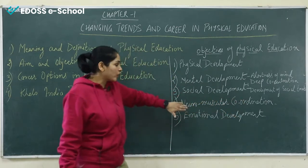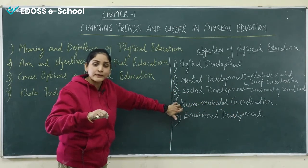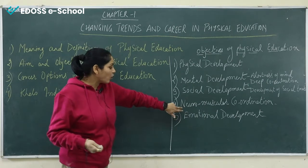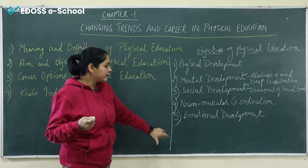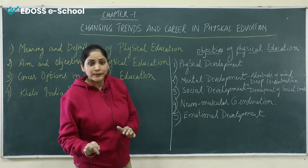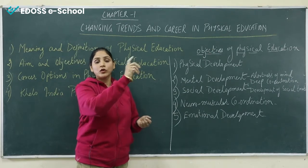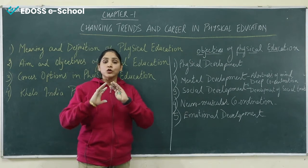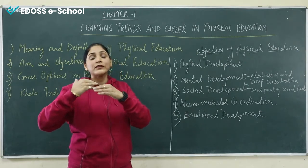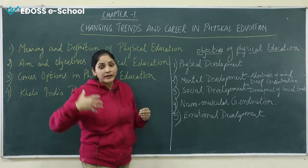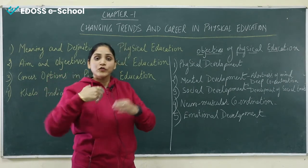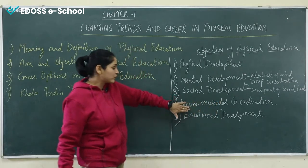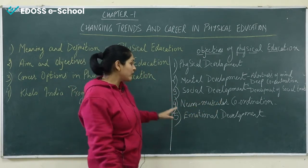After that, neuromuscular coordination — the coordination between our CNS system and muscular system. Neuromuscular coordination is a very important objective of physical education. For example, if you throw a ball to a small child repeatedly, their neuromuscular coordination gradually develops. The CNS system passes information to the muscular system, making the neuromuscular coordination more and more effective. Neuromuscular coordination is very important in the field of physical education.